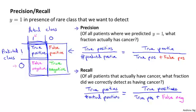Having high recall is a good thing. By computing precision and recall, we usually get a better sense of how well our classifier is doing. In particular, if a learning algorithm predicts y equals 0 all the time — predicts no one has cancer — then this classifier will have recall equal to zero, because there won't be any true positives. That's a quick way for us to recognize that such a classifier is not very good.